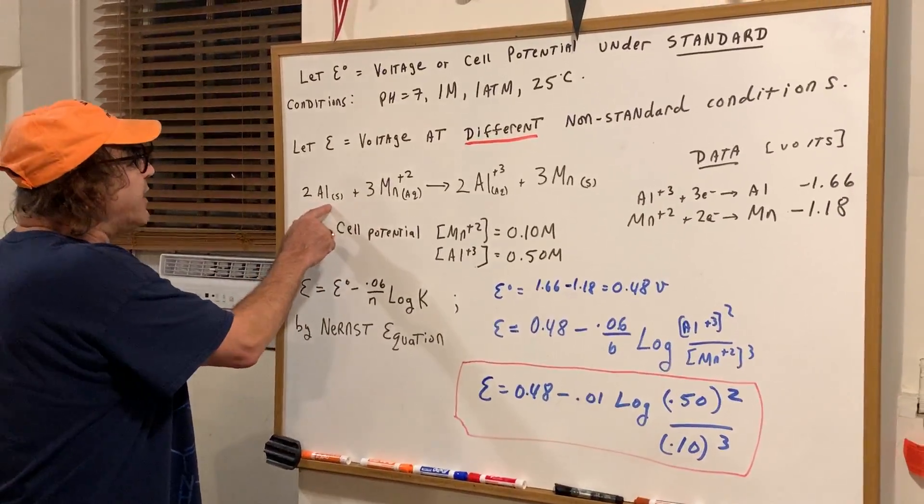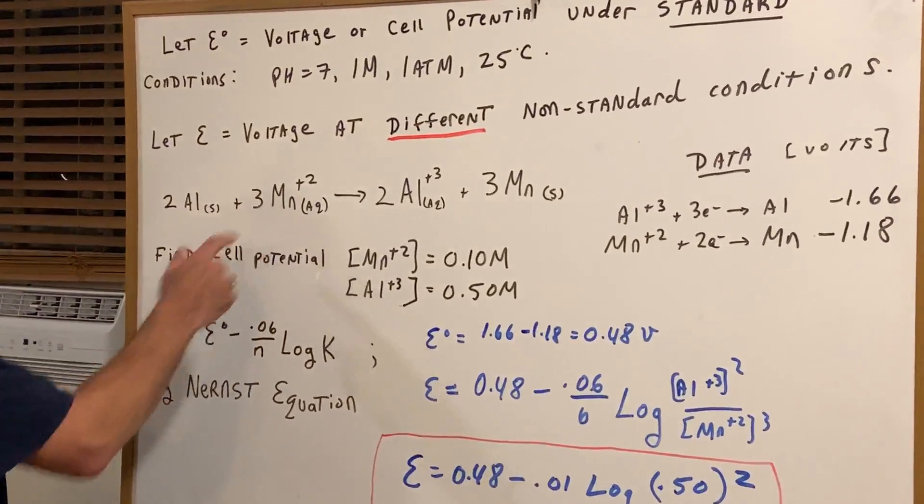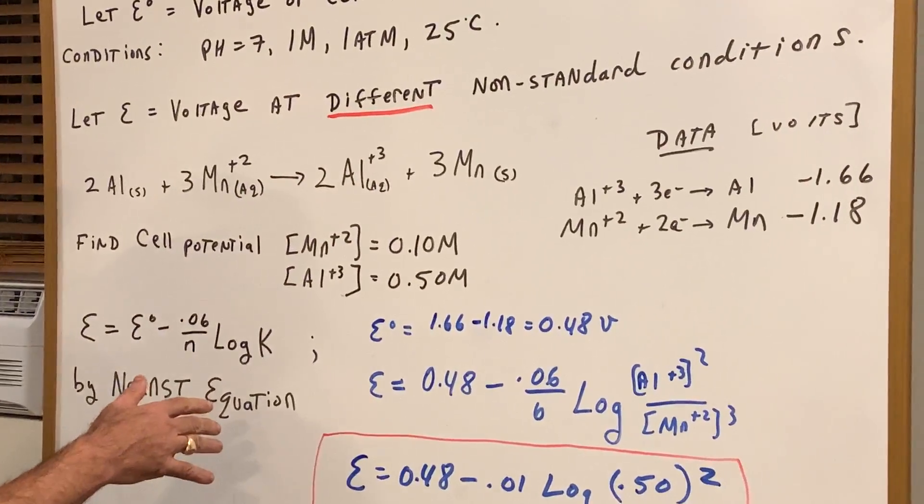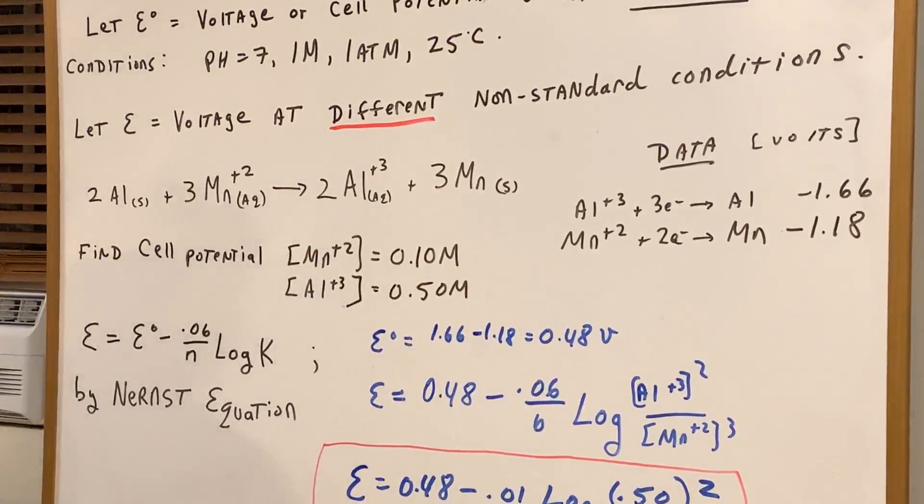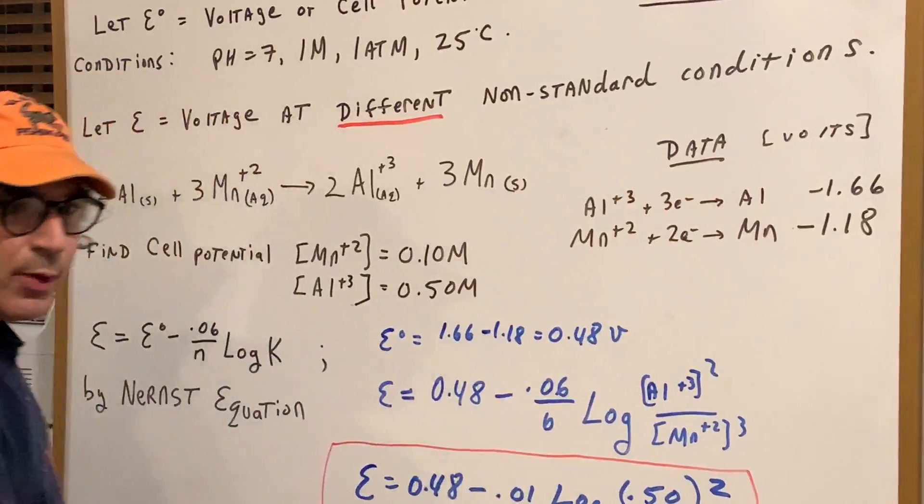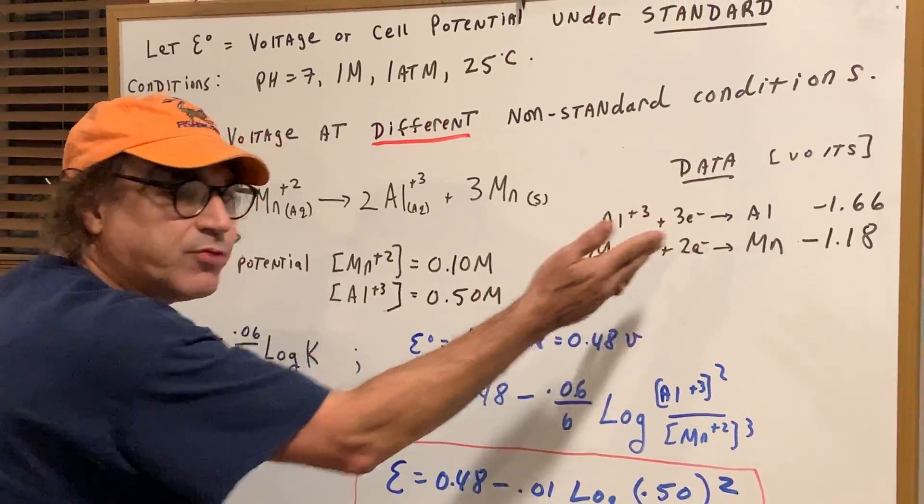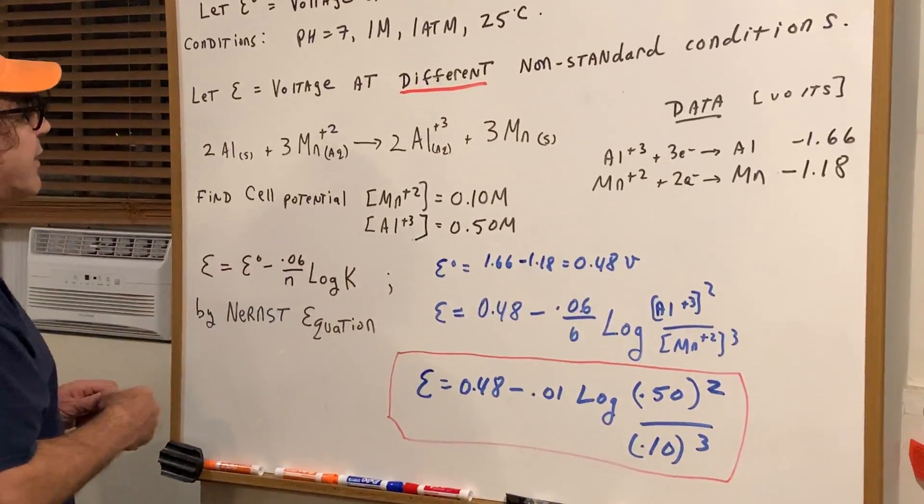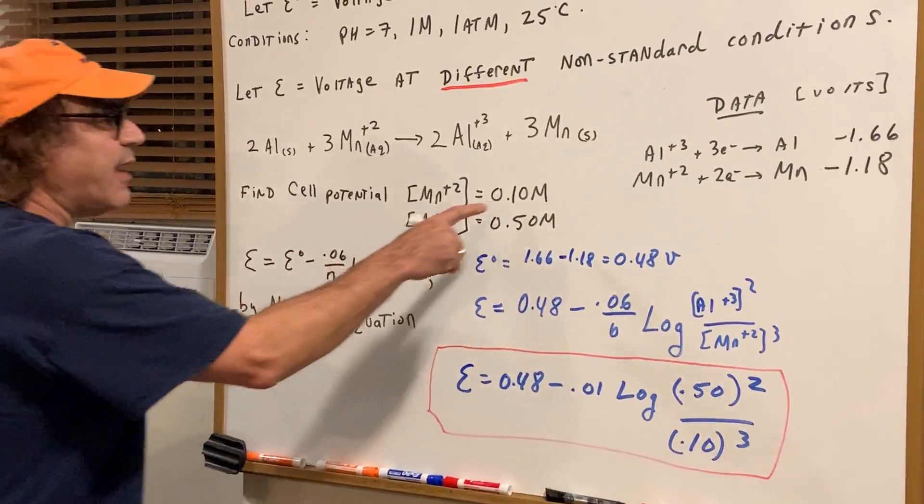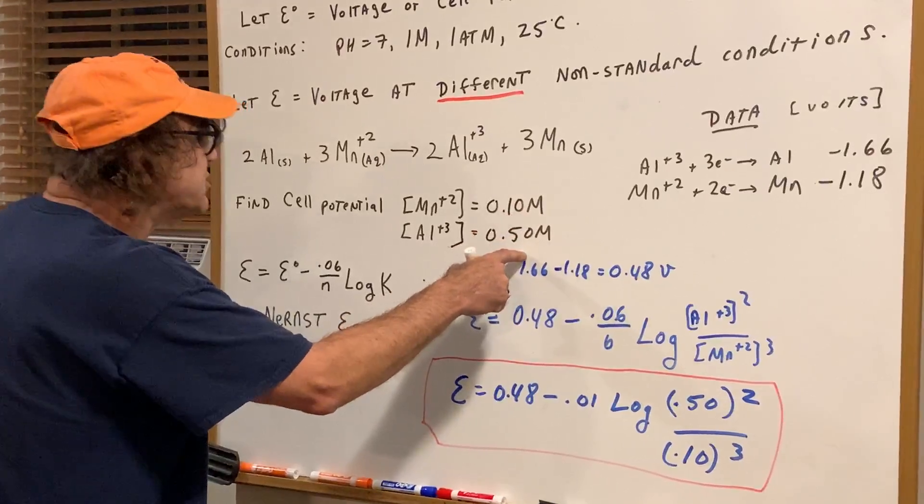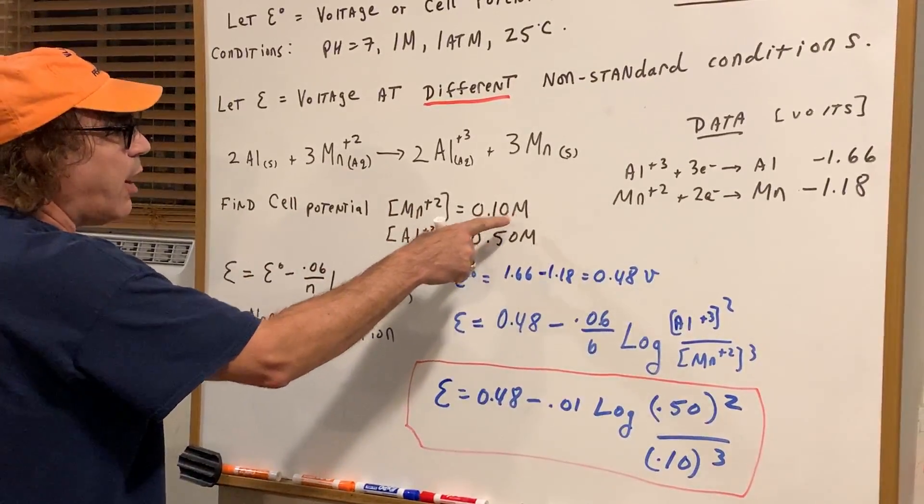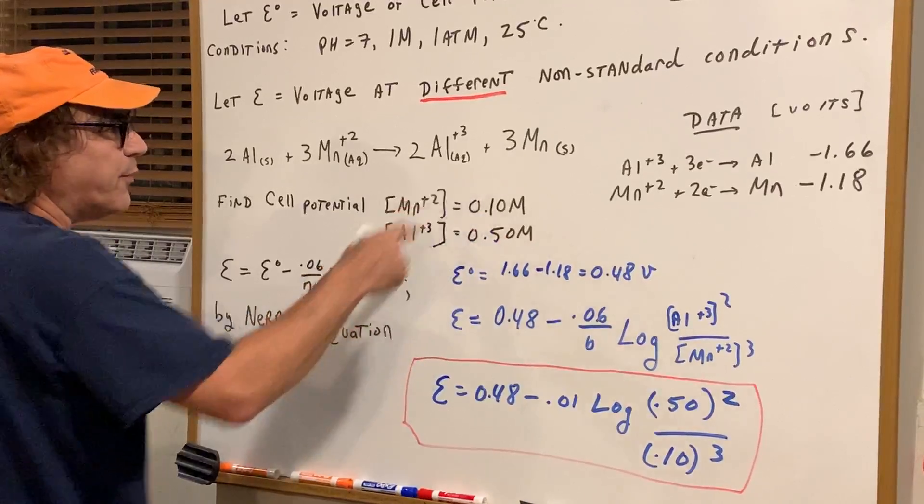Let's do an example. I give you two aluminum solid plus three manganese and it gives two aluminum plus three plus three manganese, and I give you the data like we did in class. This is called the reduction potentials. Now what I want to do is to find the cell potential given these concentrations. We know the concentration of manganese is 0.10 and 0.50 for the aluminum.